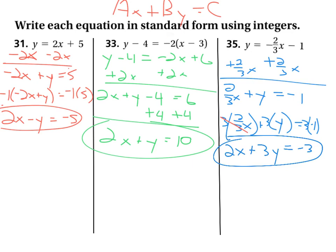Those are our three solutions. You can see that A, B, and C are integer values — whole numbers, positive or negative — and we also have our A value, the leading coefficient of x, as a positive integer.